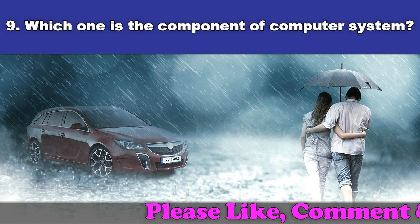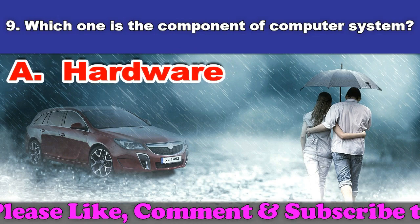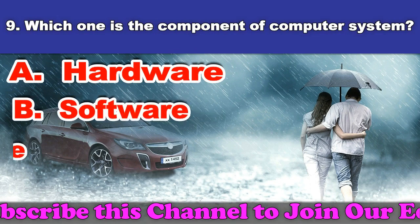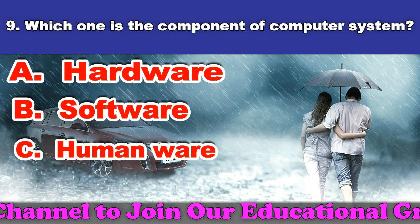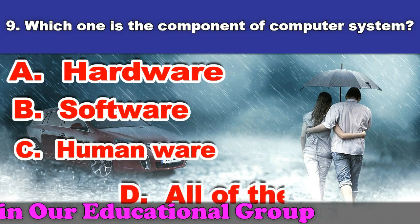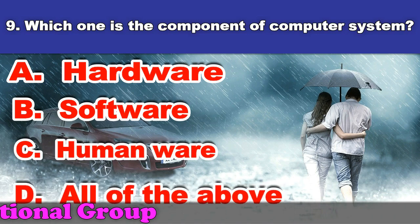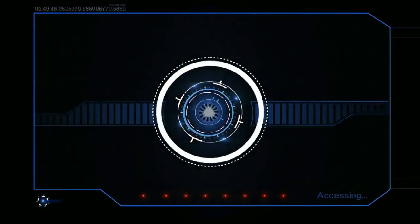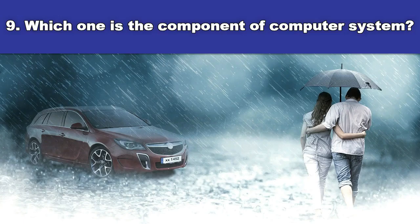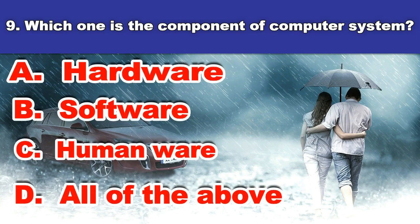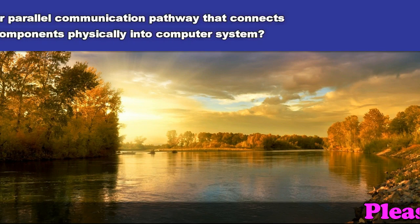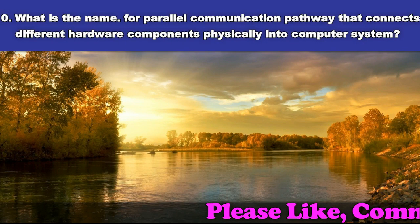Ninth question: Which one is the component of a computer system? A. Hardware. B. Software. C. Humanware. D. All of the above. And the answer is all of the above.